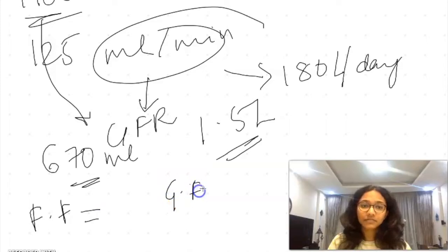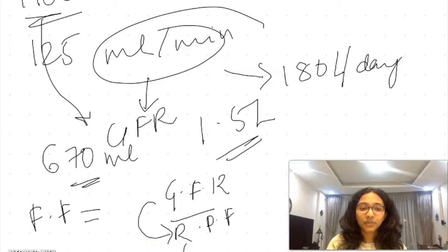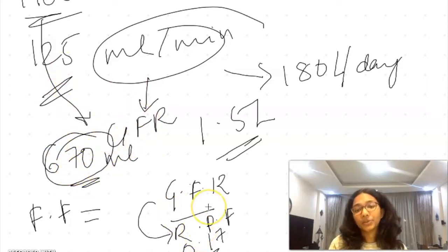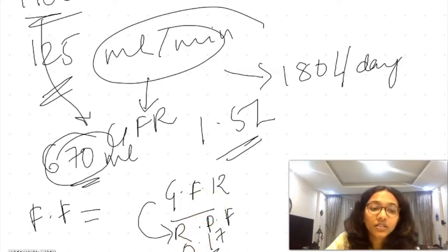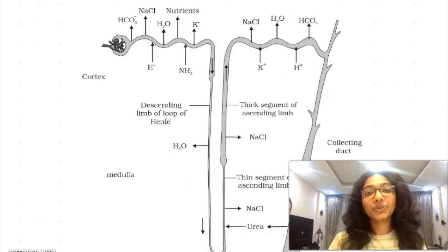There is one more value you need to know. This value is known as FF or filtration fraction. Filtration fraction is nothing but GFR divided by renal plasma flow, and this value almost comes up to 0.17 because GFR is 125 and renal plasma flow is 670.